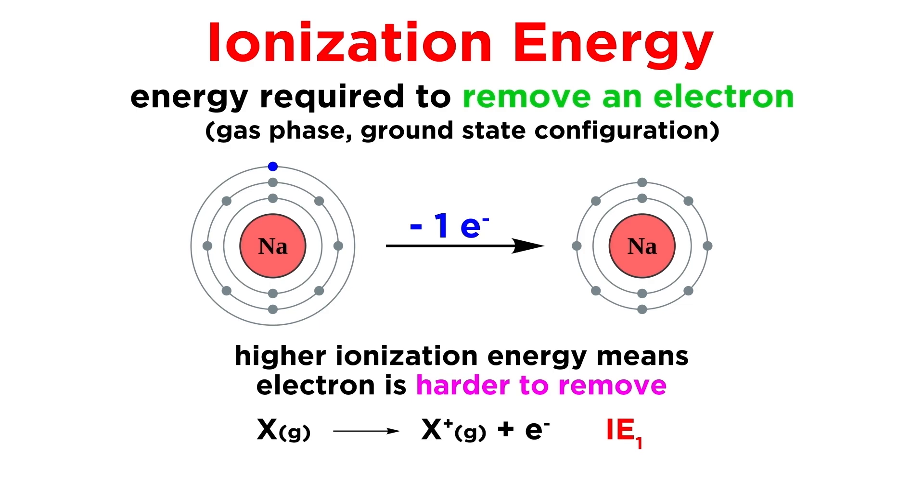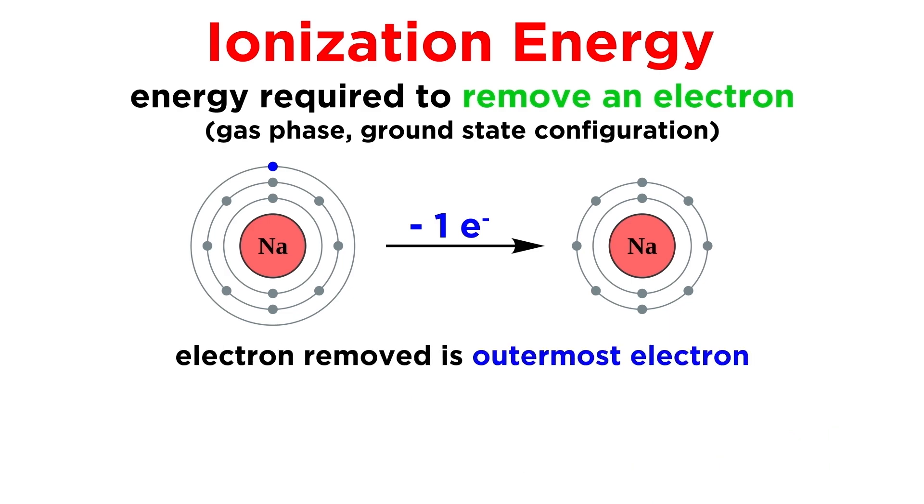Each element will have a first ionization energy, which is the energy required to generate the 1+ cation, and they will also have successive ionization energies, like the second ionization energy to go from 1+ to 2+, and so forth. Each ionization energy will be larger than the last, because it will get harder and harder to remove electrons the more positive the ion becomes, as each ionization is a further destabilization.